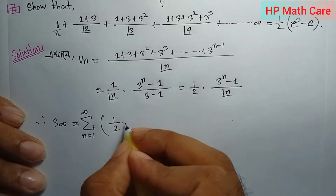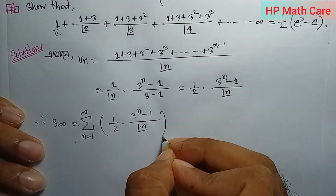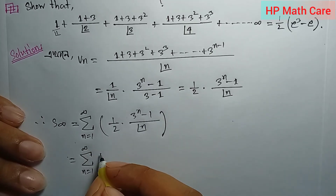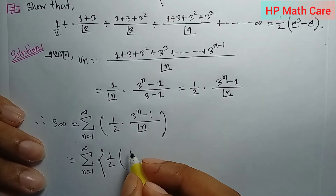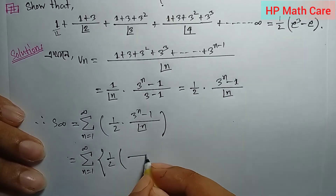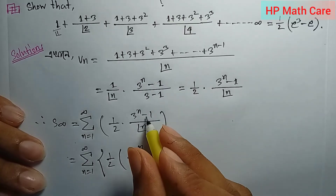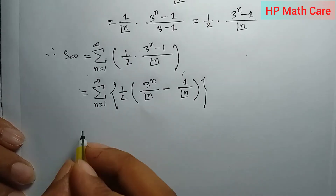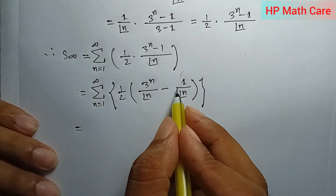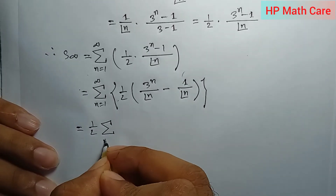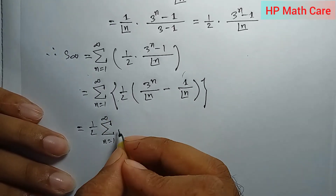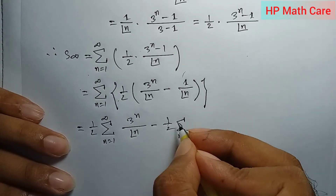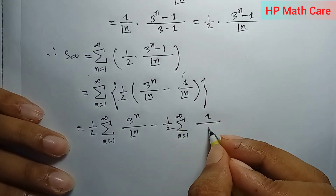So we get (1/2) times n factorial, and we need 1 divided by n factorial with 3^n. This half — we will have half of this: summation from n equals 1 to infinity of 3^n by n factorial, minus half times summation from 1 to infinity of 1 by n factorial. This gives us (1/2)(e³ minus e).